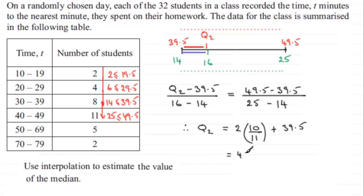Work this out and what you find is 41.31818 and so on. If I round this to, let's say, 3 significant figures, it's going to be 41.3 minutes to 3 significant figures.